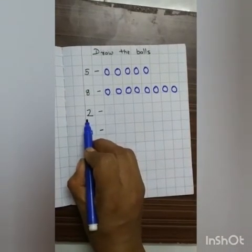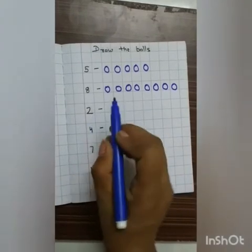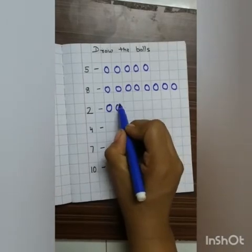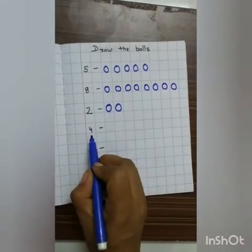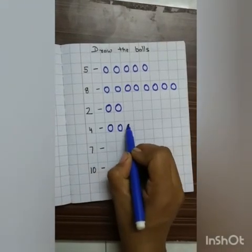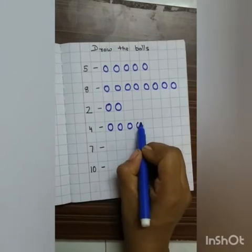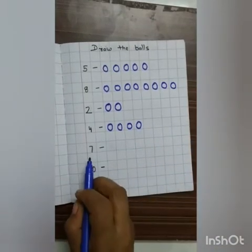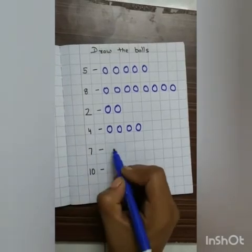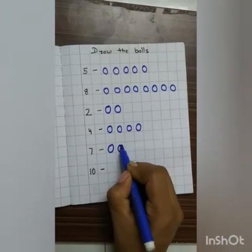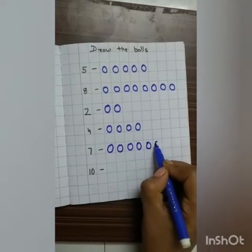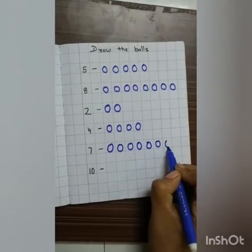This is number 2, so you have to draw only 2 balls: 1 and 2. This is number 4, so you have to draw 4 balls: 1, 2, 3, and 4. This is number 7, so you have to draw 7 balls: 1, 2, 3, 4, 5, 6, and 7.